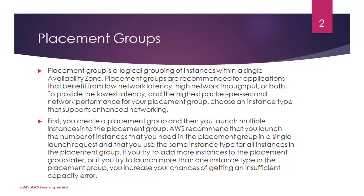If you have multiple EC2 instances running on the same availability zone, you can put them under the same placement group. Using placement groups will enable applications or EC2 instances to participate in low latency, high bandwidth networks. Placement groups are recommended for applications that benefit from low network latency, high network throughput, or both.